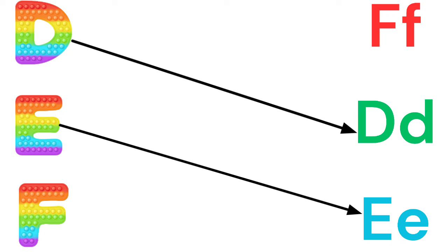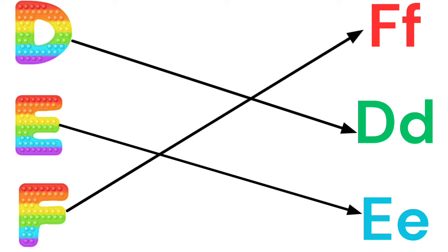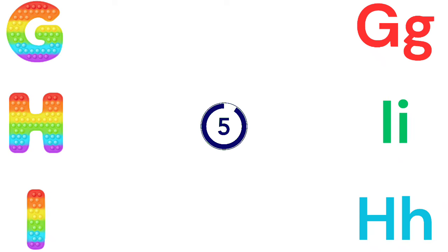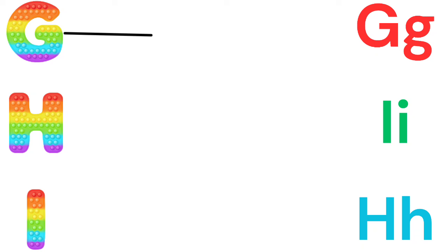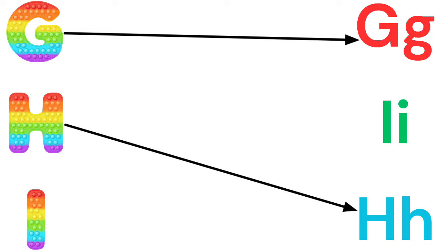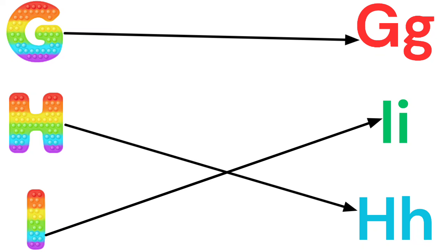E for egg, F for fire, G for grapes, H for house, I for igloo.